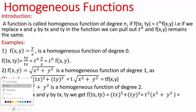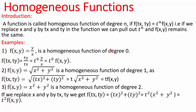If we are given a function f in x and y and we replace x by tx and y by ty, and we are able to pull out terms of t — where t is a parameter — and write it as t to the power n times f of x, y, such a function is called a homogeneous function of degree n.